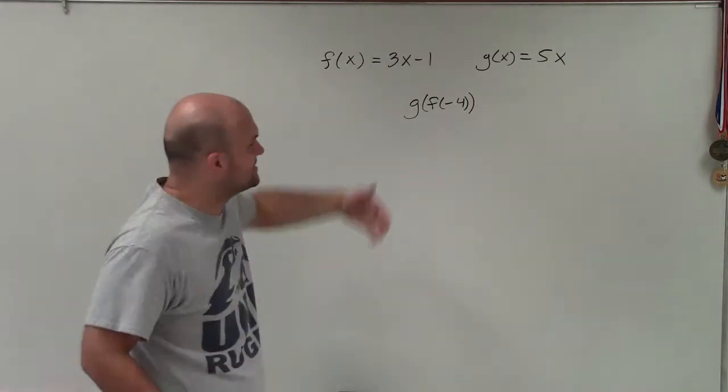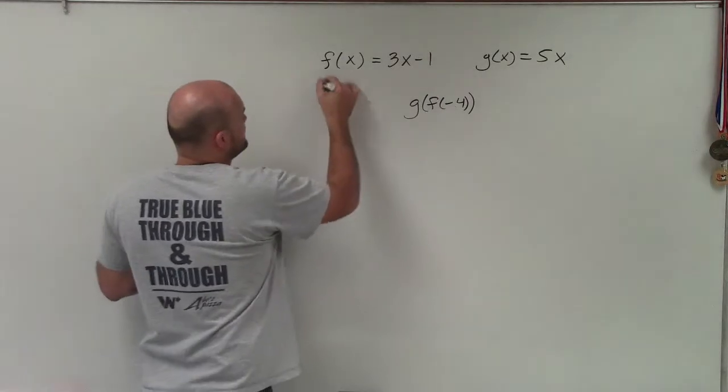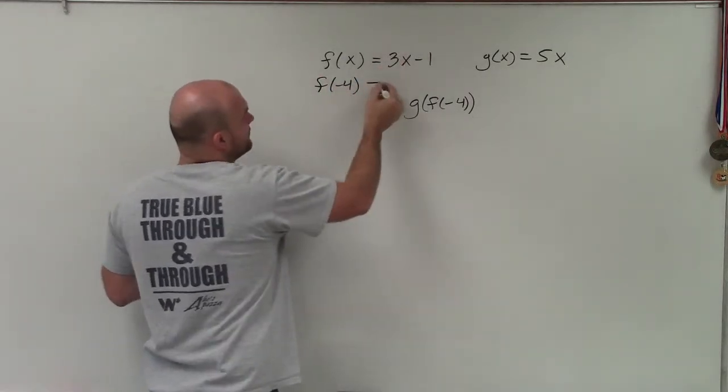So probably the easiest way to do this is evaluate for f of negative 4. So if here's my f of x, f of negative 4, I'm just going to plug negative 4 in for the x.